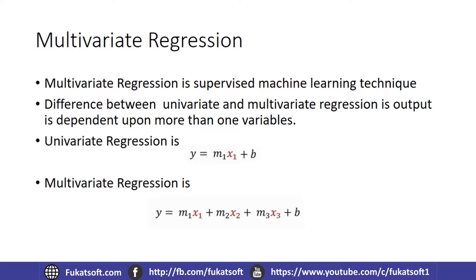Multivariate regression is a supervised machine learning technique. In supervised machine learning, we have labels. So multivariate regression is basically a type of supervised machine learning algorithm.